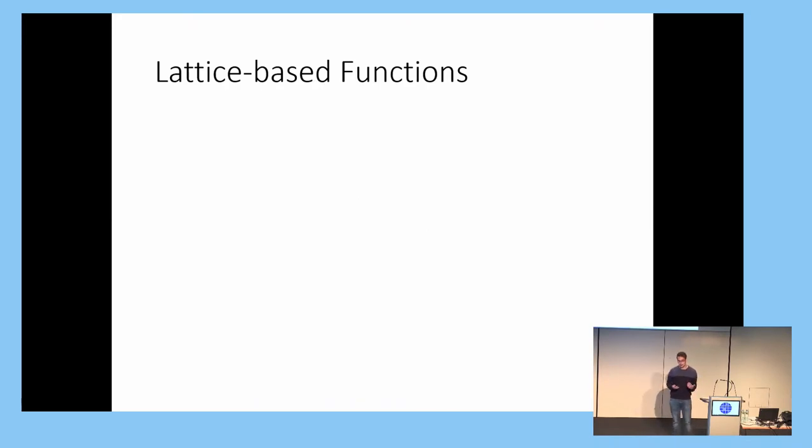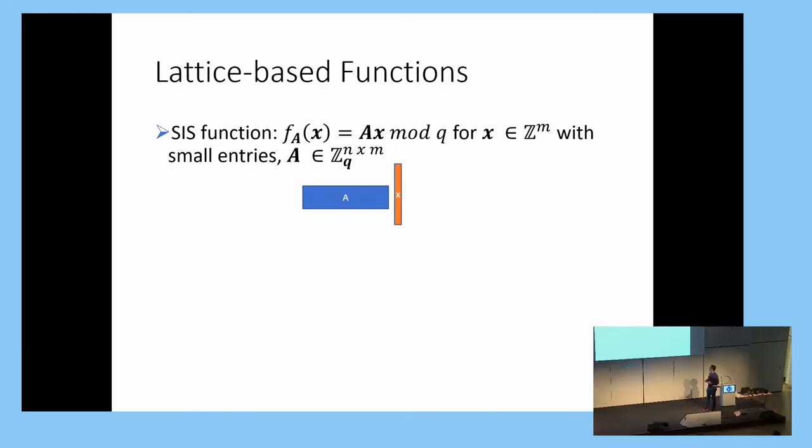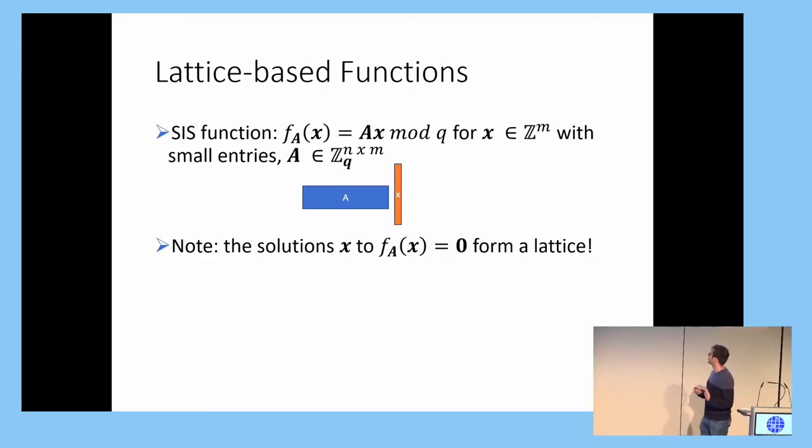So before we can define a gadget, we're going to have to talk about some lattice-based functions. And we designed these gadgets so these functions are always easy to invert. The first function is the SIS function. It is parameterized by matrix A, that's short and fat, with entries modulo q. And the domain is the set of short integer vectors with small entries.